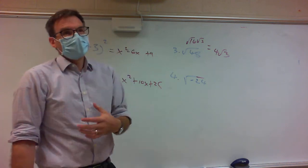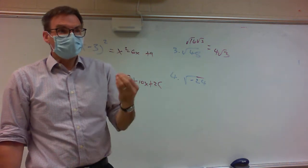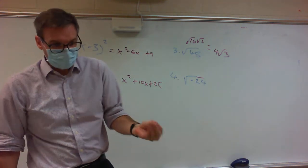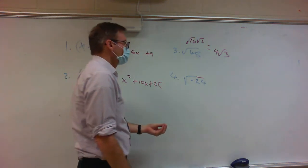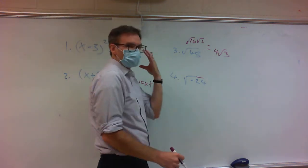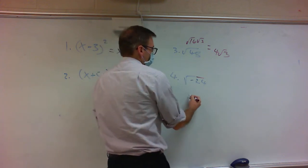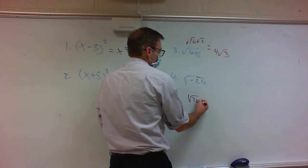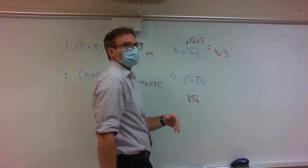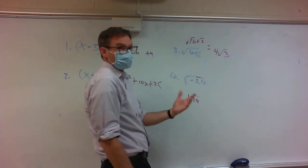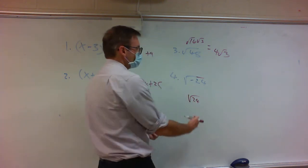When you take the square root of a negative number, you're guaranteed to have an i in your answer. In your mind, you think: what's the square root of 24, and just make sure I stick an i in the answer.